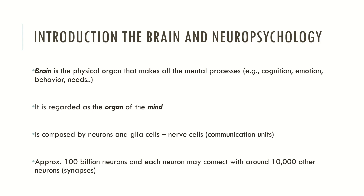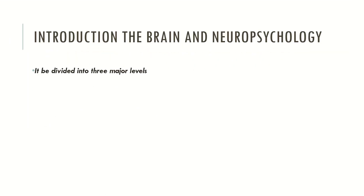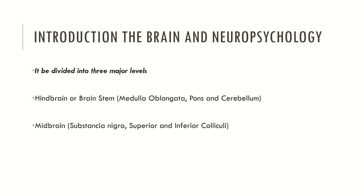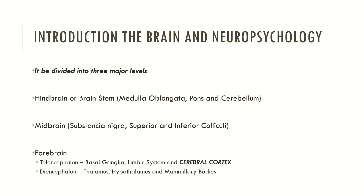The brain is divided into three major levels. The hindbrain or brainstem, which contains the medulla oblongata, the pons and cerebellum. The midbrain, which contains the substantia nigra and the superior and inferior colliculi. And the forebrain, which contains the telencephalon, composed by the basal ganglia, limbic system and the cerebral cortex.